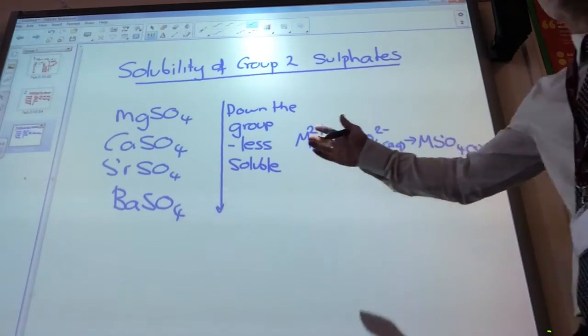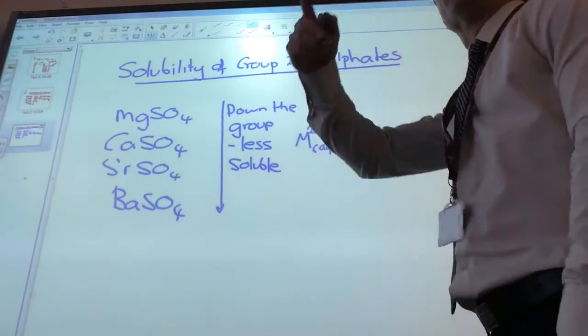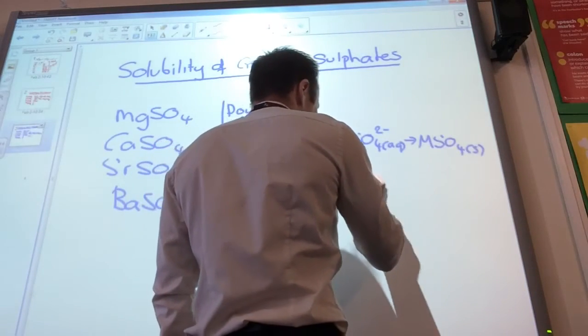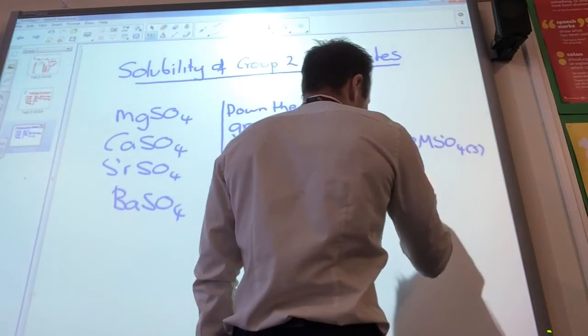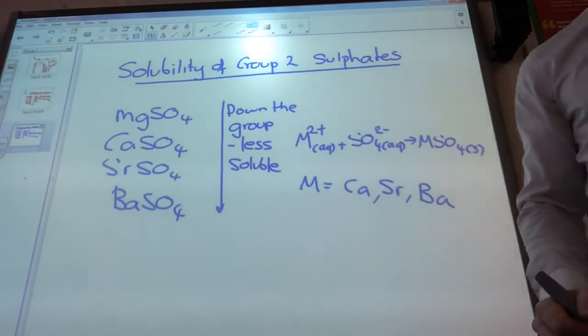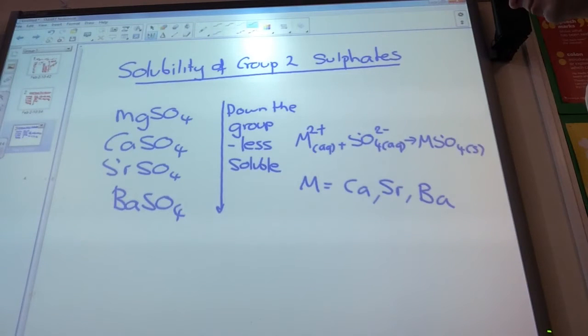M is just any group 2, so M could equal calcium, strontium, or barium, not magnesium because magnesium is soluble.